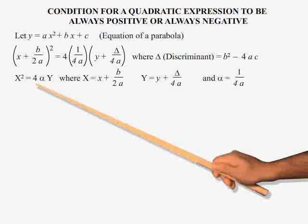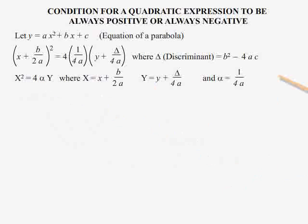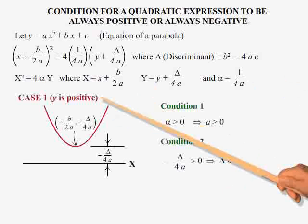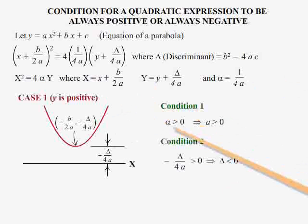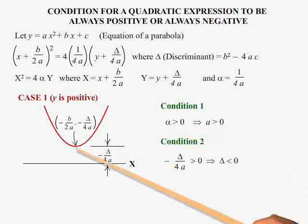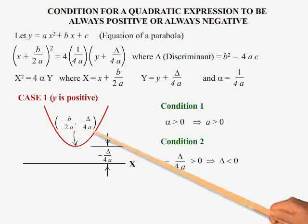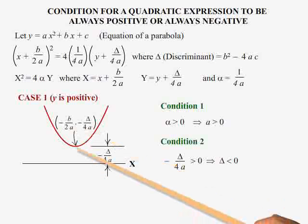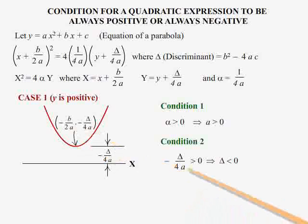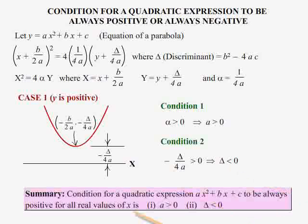Going back to the parabola obtained by simplifying the quadratic expression: Case 1, y is always positive. Condition 1: alpha should be positive, in other words a should be positive. Condition 2: the vertex of the parabola is at coordinates minus b over 2a, minus delta over 4a, and y is always positive if this distance is positive, which implies delta is less than 0. Summary: for the quadratic expression ax squared plus bx plus c to be always positive for all real values of x, a must be greater than 0 and delta must be less than 0.